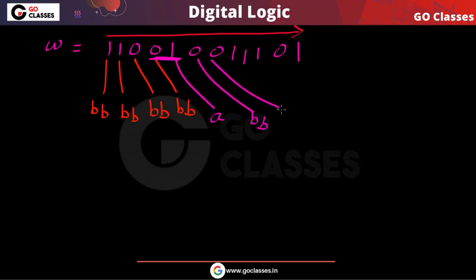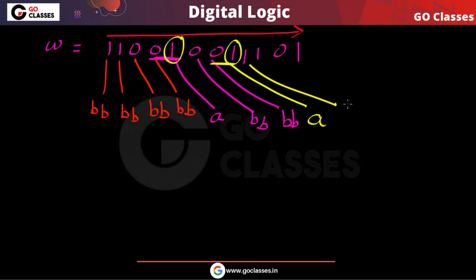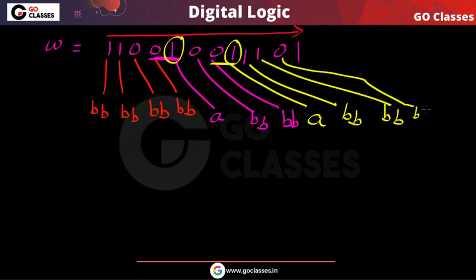Again I will print B. Now because I am seeing this 01, here we will print A. So for this 01 I am printing A. Here for this 01 I am printing A. Again here I am printing B, here I am printing B. For this 01 also I am printing B. And now for this 01 we are printing A. This is the idea.